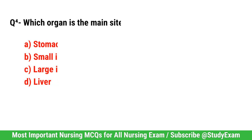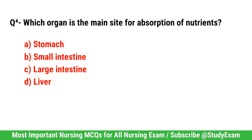Question No. 4. Which organ is the main site for absorption of nutrients? Correct option is B. Small intestine.